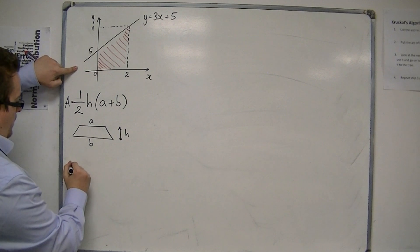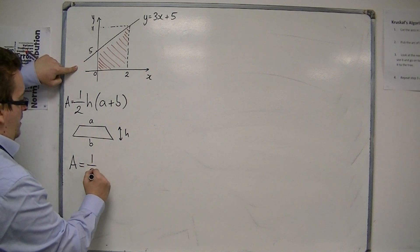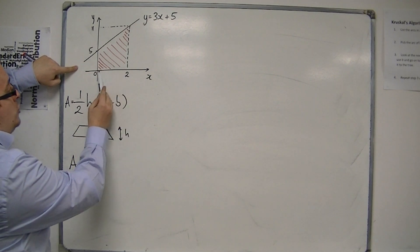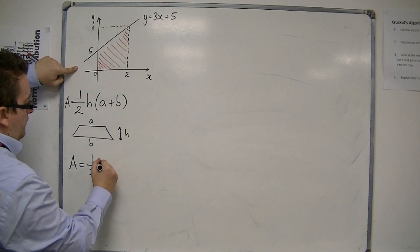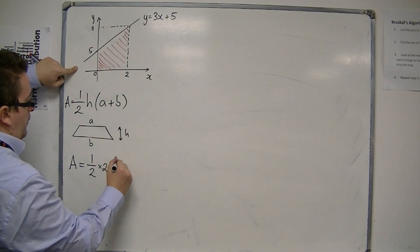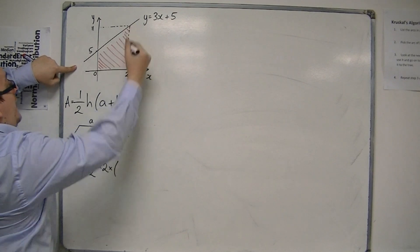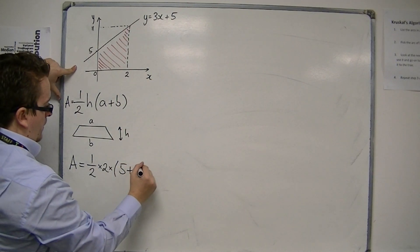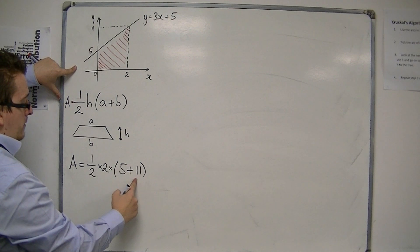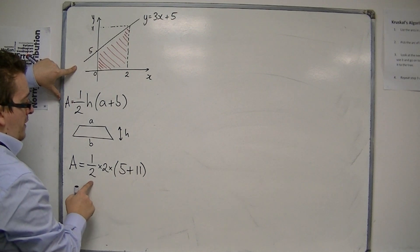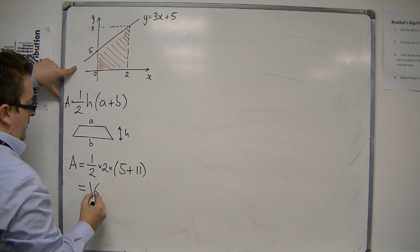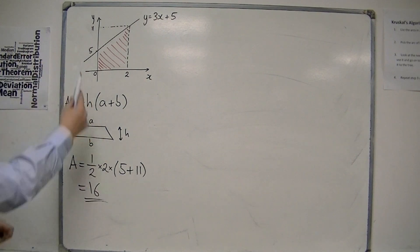So in our case, we have 1/2 times h. Now h is actually that length, the 2, times by the sum of the two lengths, 5 and 11. So that's 16 times 2 is 32, half of 32 is 16. So that is the area of this trapezium.